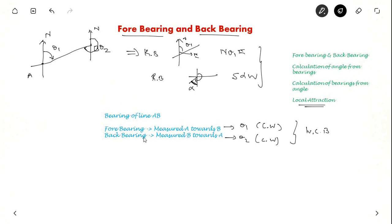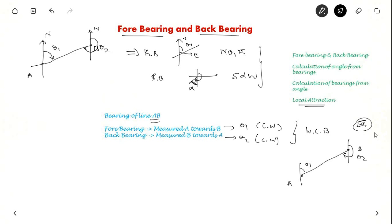Now, what is the bearing of line BA? If this is line BA, forebearing will be measured from B towards A because we are measuring the bearing of line BA. So here forebearing is theta 2 and backbearing will be theta 1 for line BA. You have to note the term properly — whether it is AB or BA.